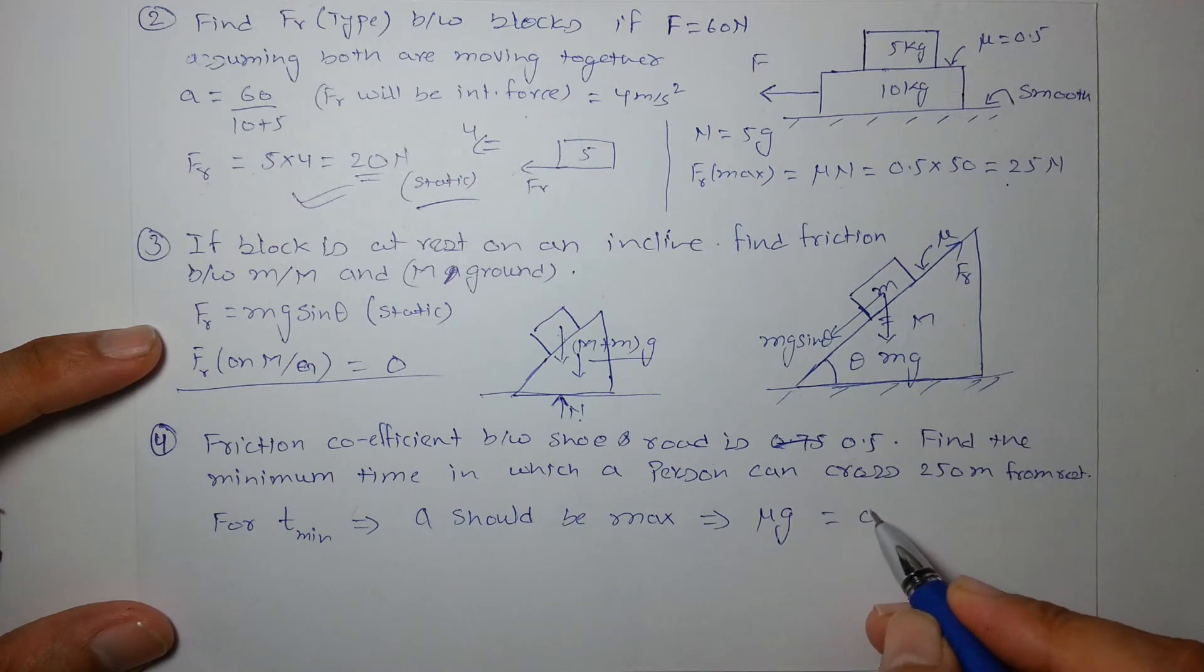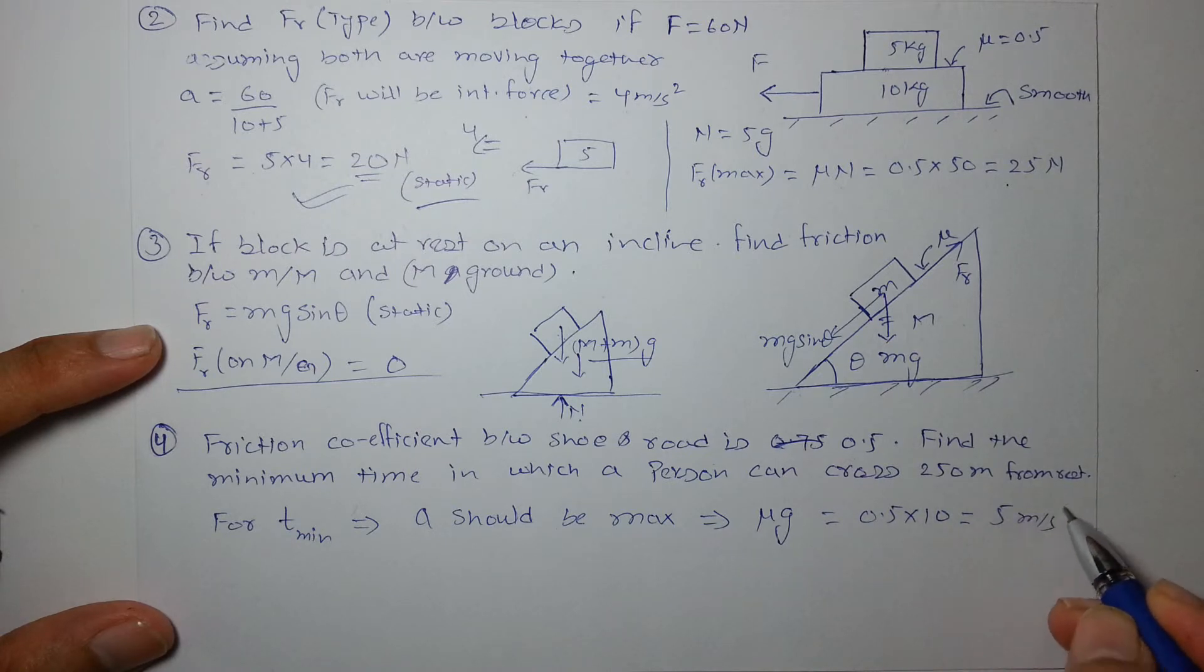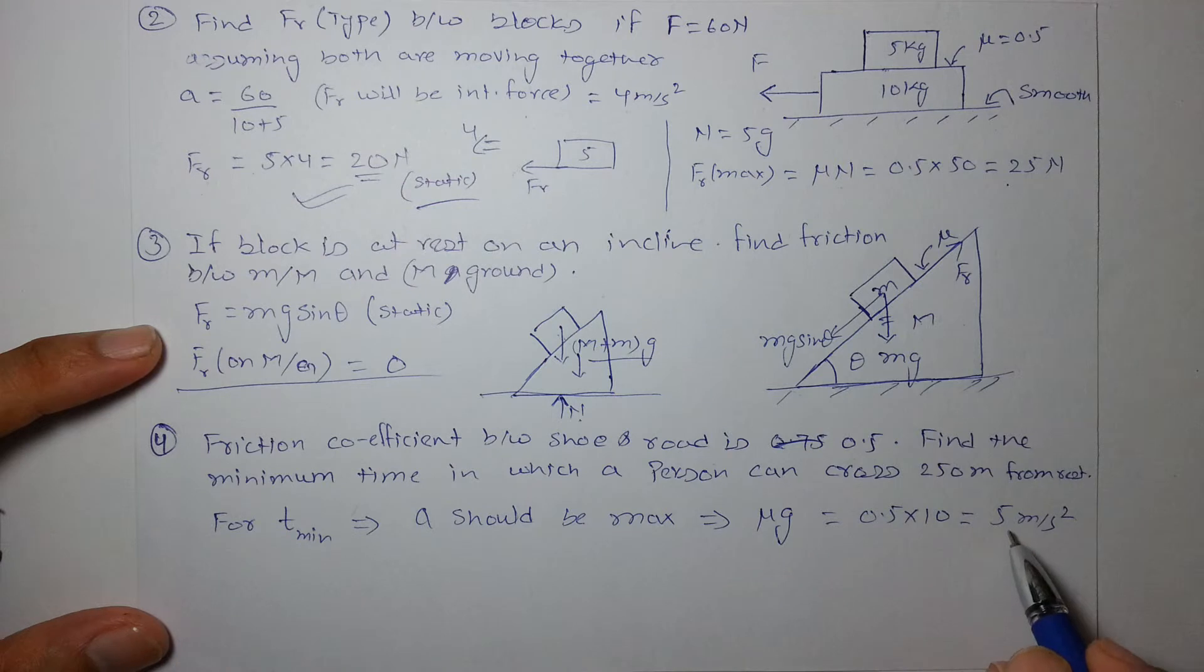Which in this case is 0.5 into 10, approximately, that is 5 meter per second square. So the maximum acceleration a person can get with the help of friction alone is 5 meter per second square in this case. For T min we can say S is equal to half A T square.